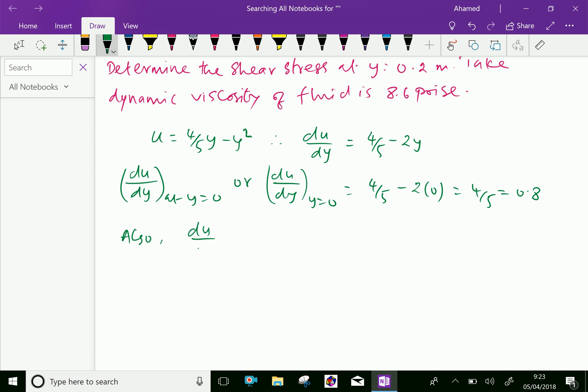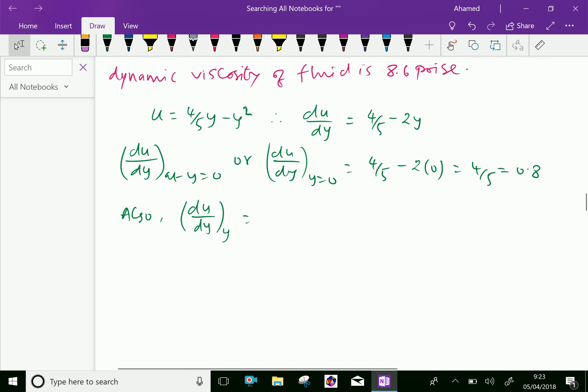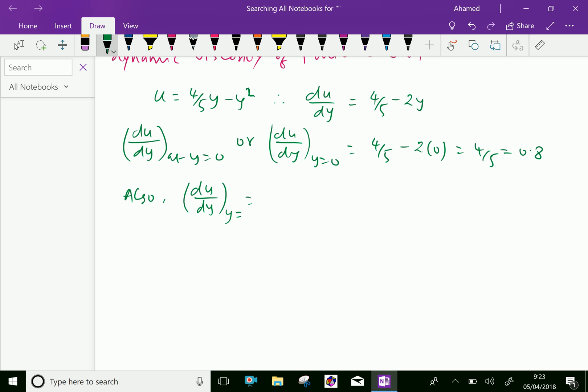Also, du/dy at y = 0.2 equals 4/5 minus 2(0.2), which equals 0.8 minus 0.4, which is equal to 0.4.